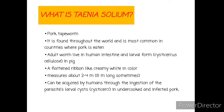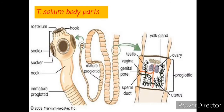This can be acquired by humans through the ingestion of the parasite's larval cysts, or cysticercus, in undercooked and infected pork. Like any other organisms, Taenia solium also has its parts. The scolex acts as an attachment device with four suckers, hooks, and a rostellum used to attach itself to the intestine of the host.